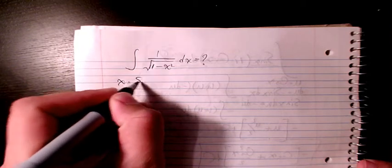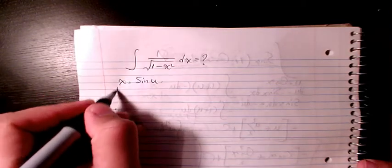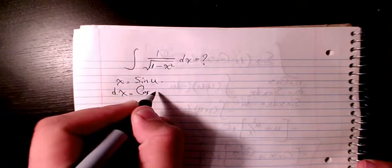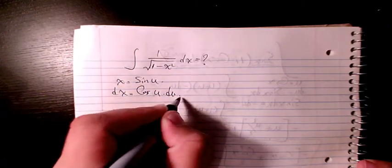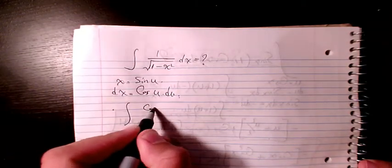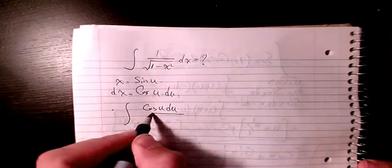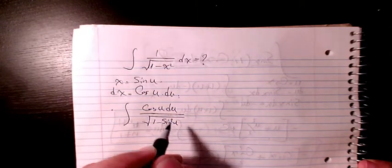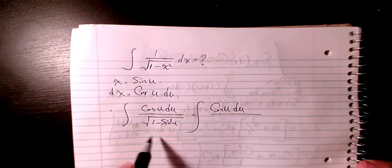as sine u, so dx will be cosine u du. And the denominator will be 1 minus sine squared u, so it will be cosine u du over the square root of 1 minus sine squared u. And here